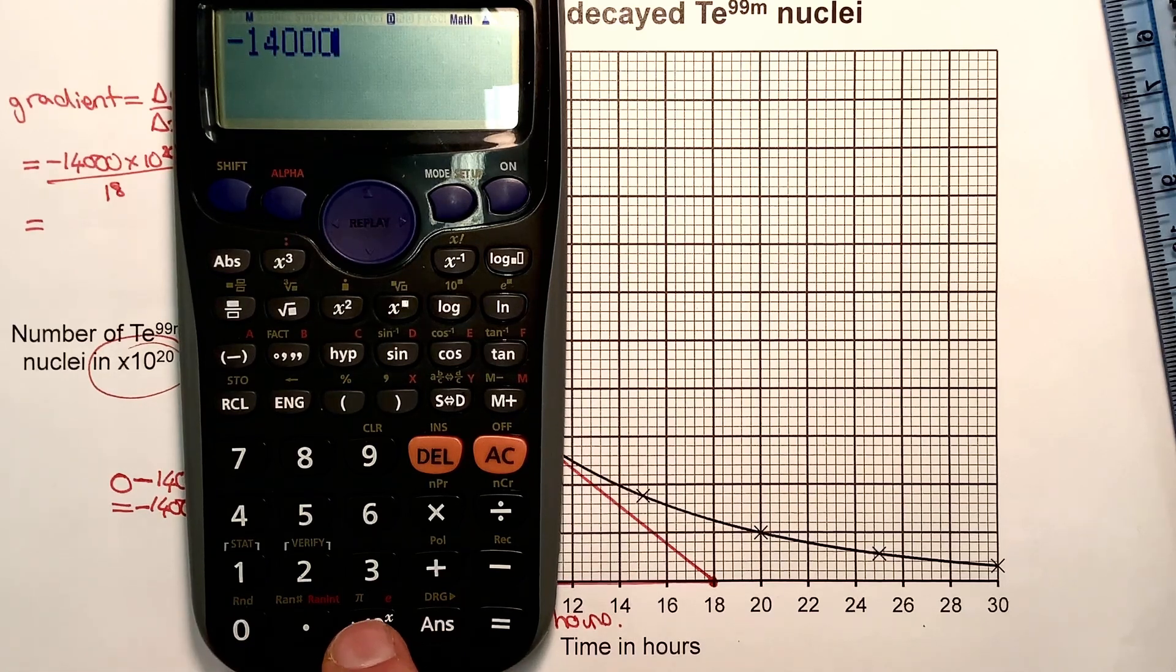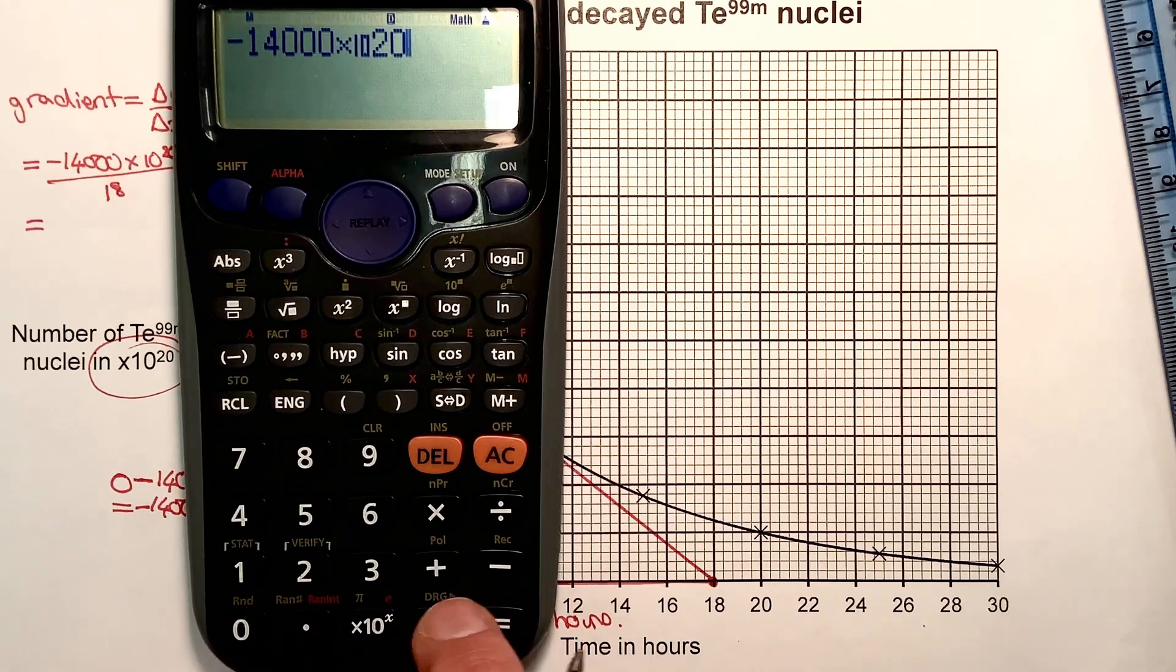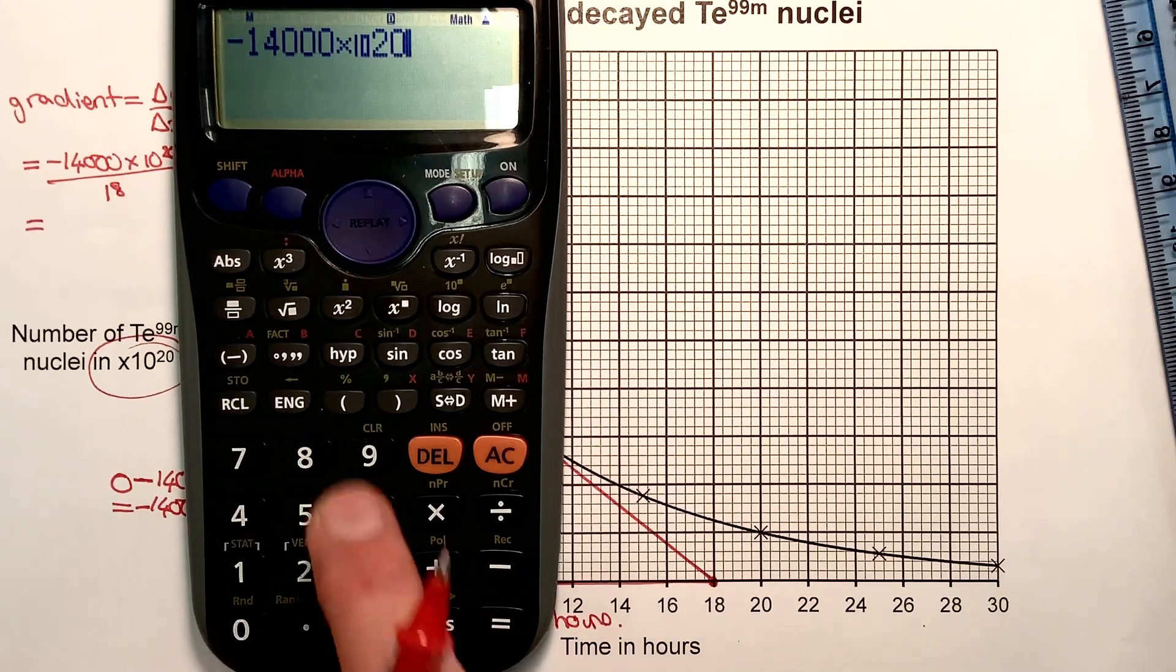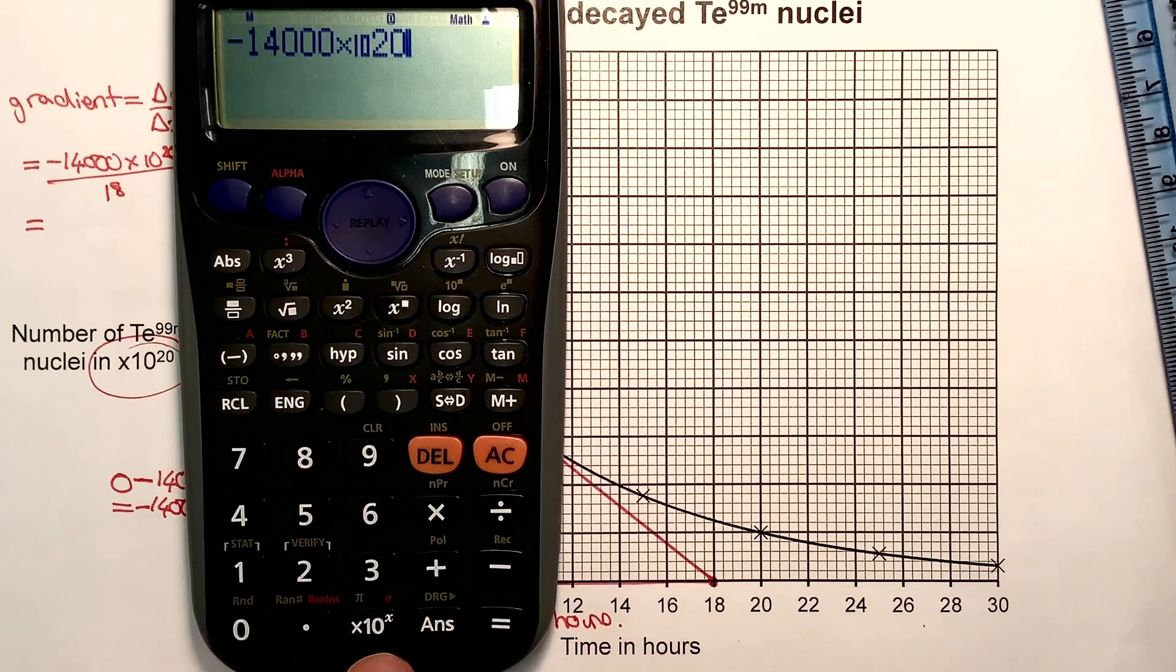To do times 10 to the 20, which is like doing standard form, I need to use this button in the middle at the bottom and do times 10 to the 20. It's much better to use this for standard form than buttons up here, because it's quicker and you don't have to put brackets around things.